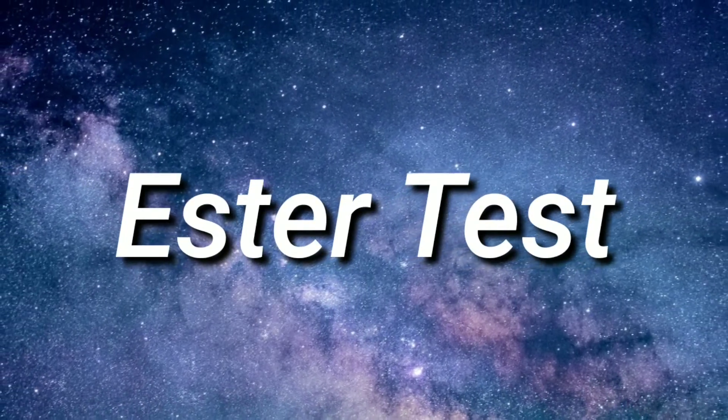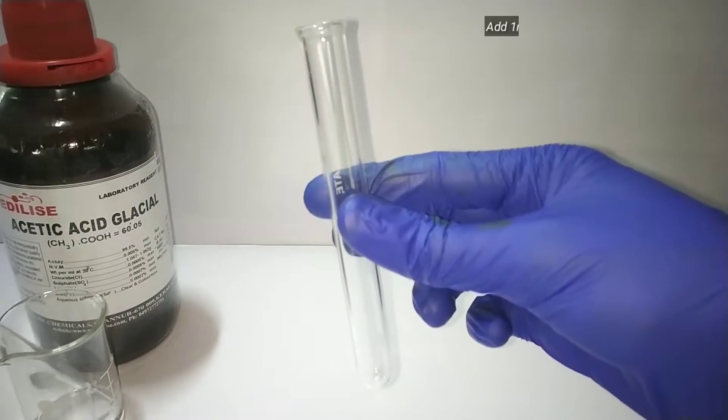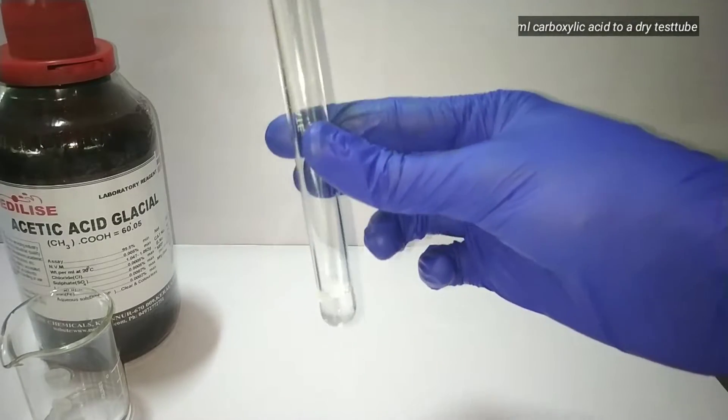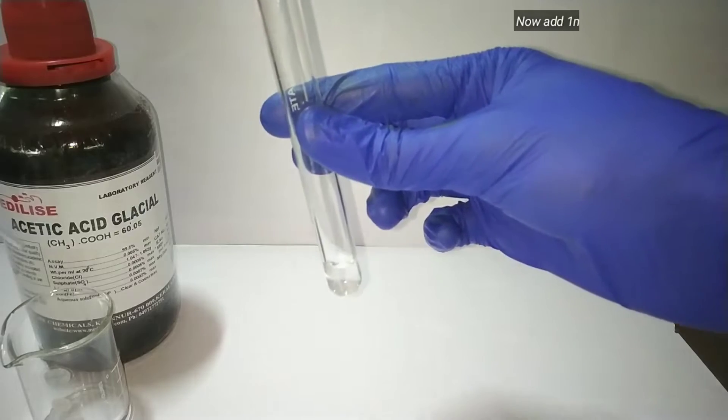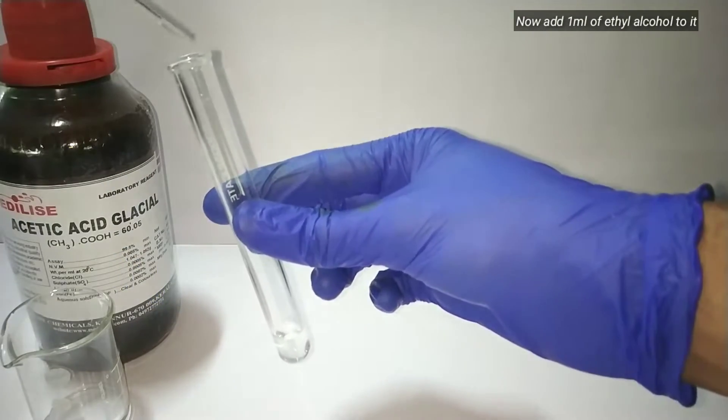The next test is the ester test. For that, we take a clean and dry test tube and add one milliliter of the carboxylic acid. Then I add equal volume, one milliliter of ethyl alcohol.